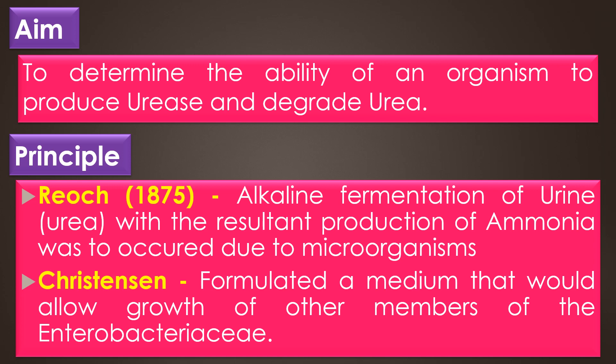Principle. In 1875, Ryoj found that the alkaline fermentation of urea which is present in the urine, with the resultant production of ammonia, was hypothesized to occur due to the action of microorganisms. Christensen later formulated a medium that would allow the growth of other members of the Enterobacteriaceae that cannot utilize the byproduct of urea hydrolysis — i.e., the ammonia — as a sole nitrogen source for growth.